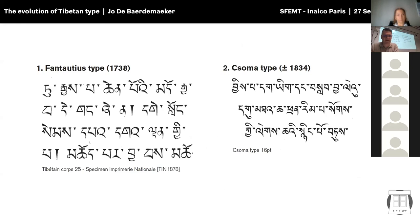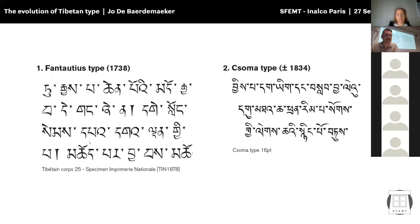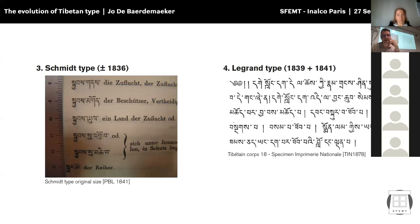A brief summary of the typefaces so far: Fantautius, 1738 — the first one; Csoma and Schmidt — mainly for missionary printing presses, grammar books, and important dictionaries; the Legrand type from France, from the Imprimerie Nationale; the Auer types in Vienna, Austria; and Stephen Austin in the UK.